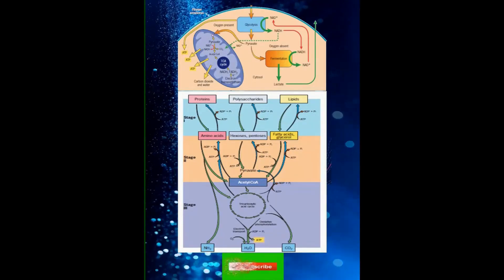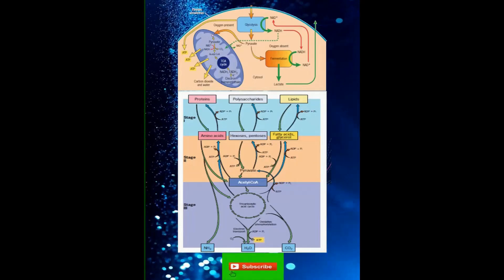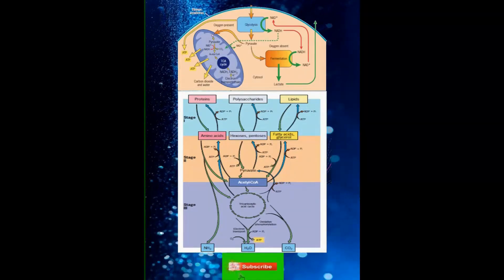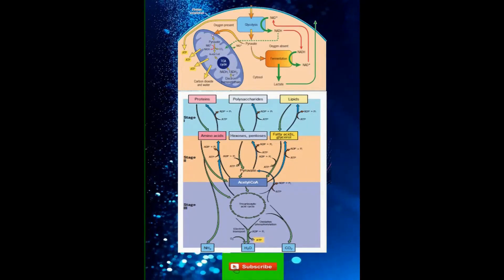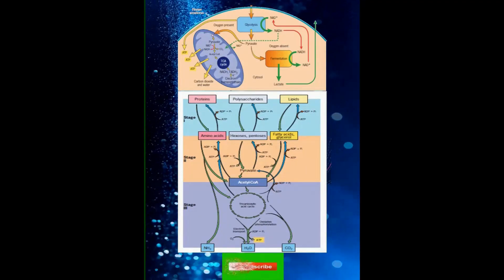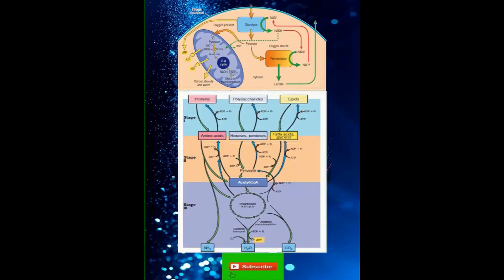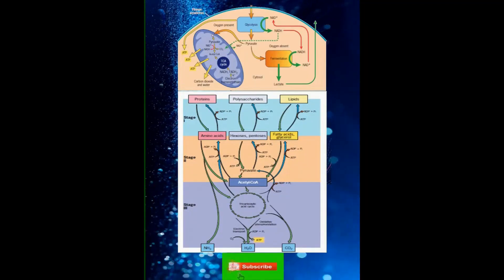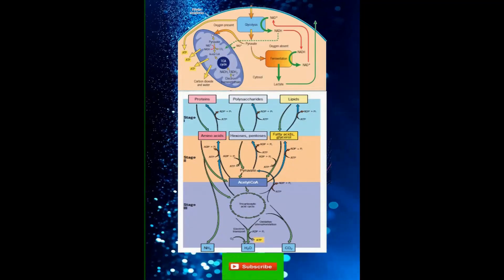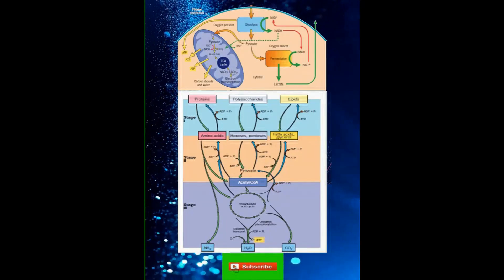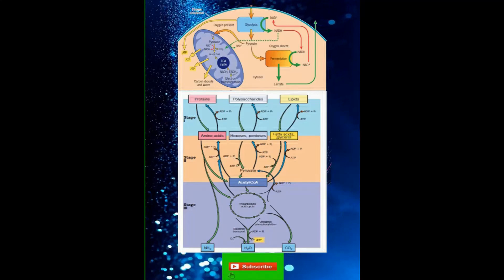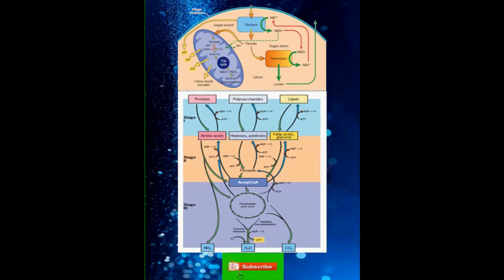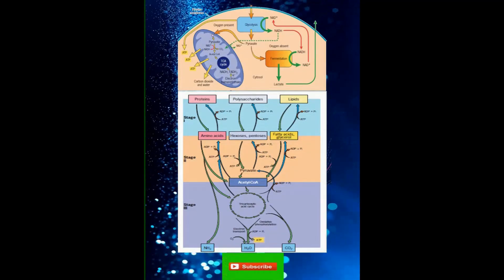The 10 reactions that constitute the glycolytic pathway were also illustrated in the last video. Only a small fraction of free energy available in glucose is made available to the cells during glycolysis, enough for the net synthesis of only two molecules of ATP per molecule of glucose oxidized. Most of the energy remains stored in pyruvate.